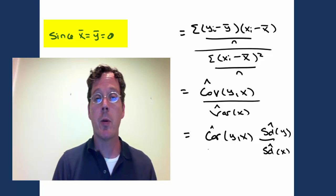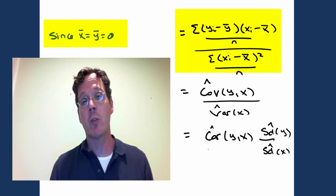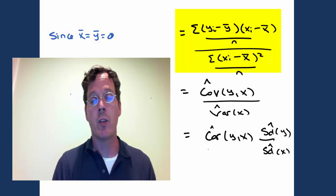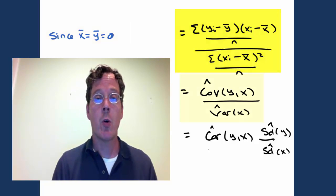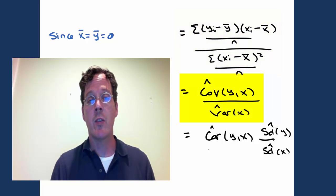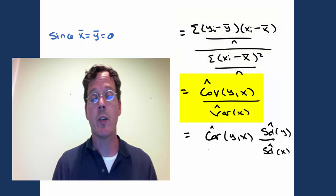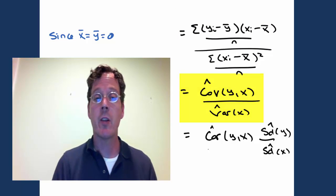Because y bar and x bar are both 0, we can pretend like we're subtracting them off in all of these terms. So now that we relook at this equation, basically what we see is that it's the estimated covariance between y and x divided by the variance of x.